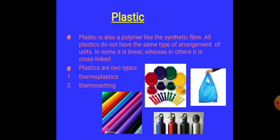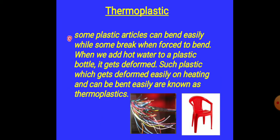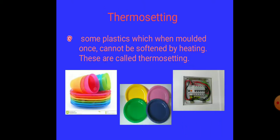Plastics are two types: thermoplastics and thermosetting plastics. Thermoplastics: some plastic articles can bend easily while some break when forced to bend. When we add hot water to a plastic bottle, it gets deformed. You might have performed this activity too. Such plastic which gets deformed easily on heating and can be bent easily are known as thermoplastics.